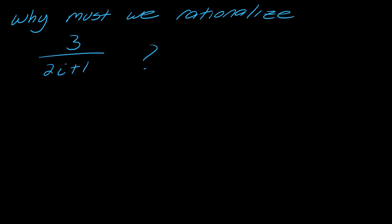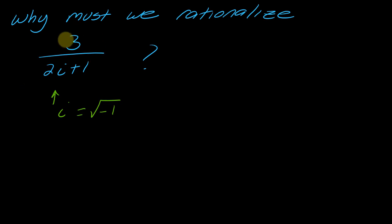Now let's talk about division. We have to rationalize expressions that look like this. Maybe pause the video and think about why we must rationalize expressions like this. The reason is that i is a square root, and you can't have a square root in the denominator. So you have to rationalize by multiplying by the conjugate, just like you would with any other rationalization.